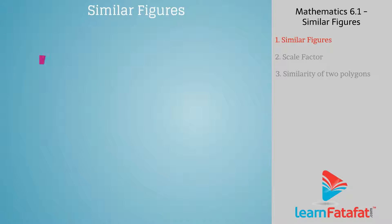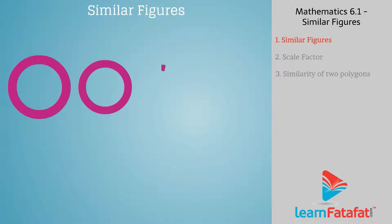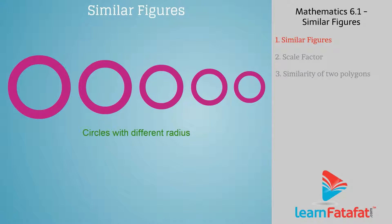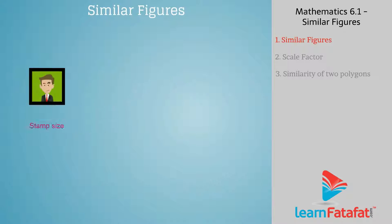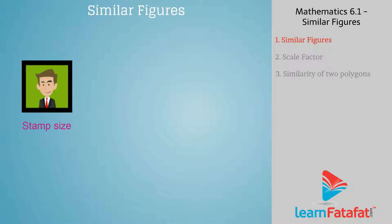Consider circles which are not congruent but have the same shape, so they are similar. Hence, congruent figures are similar, but similar figures need not be congruent.